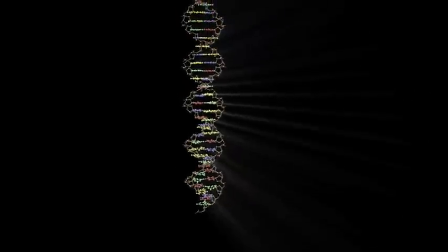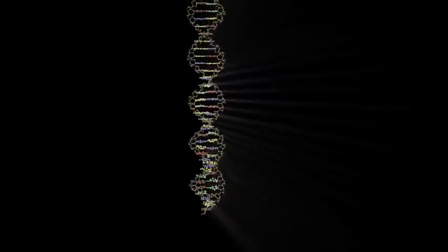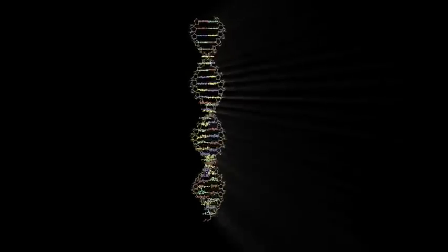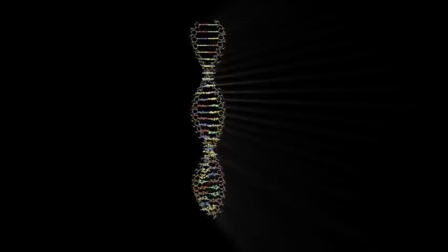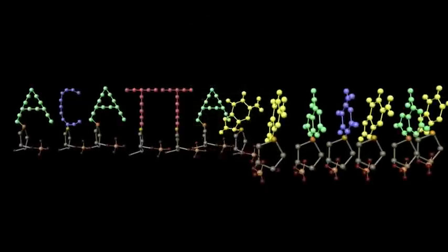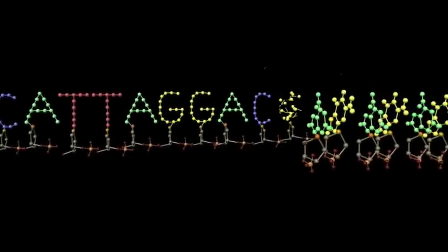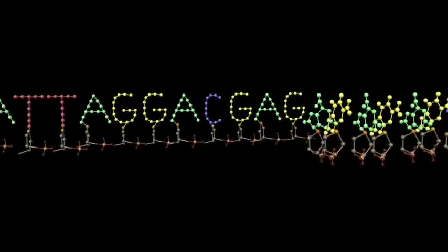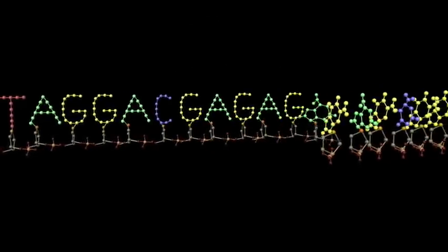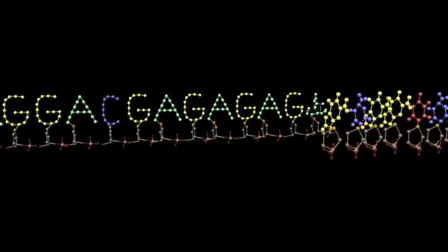The DNA molecule itself resembles a sort of twisted ladder. The steps of the DNA ladder consist of four different molecules: adenine, thymine, cytosine, and guanine.